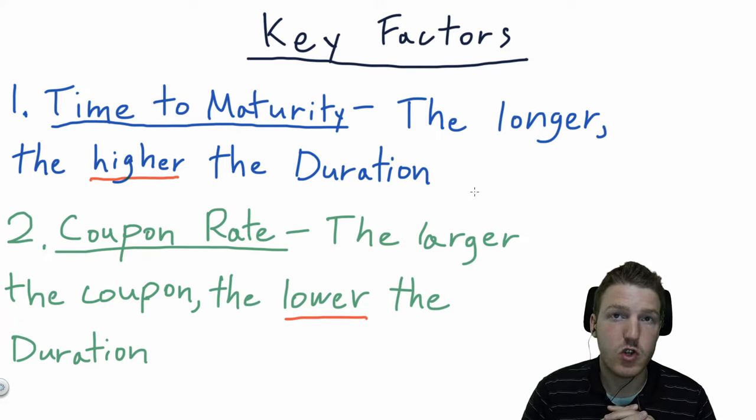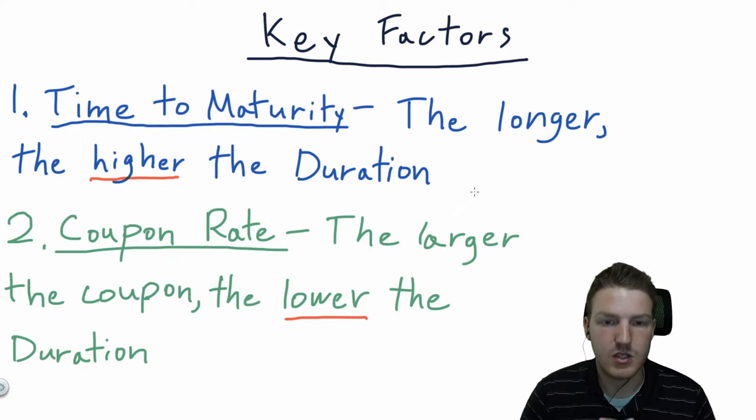So it's very sensitive to the time to maturity. The second factor is the coupon rate. So the larger the coupon rate, the lower the duration.